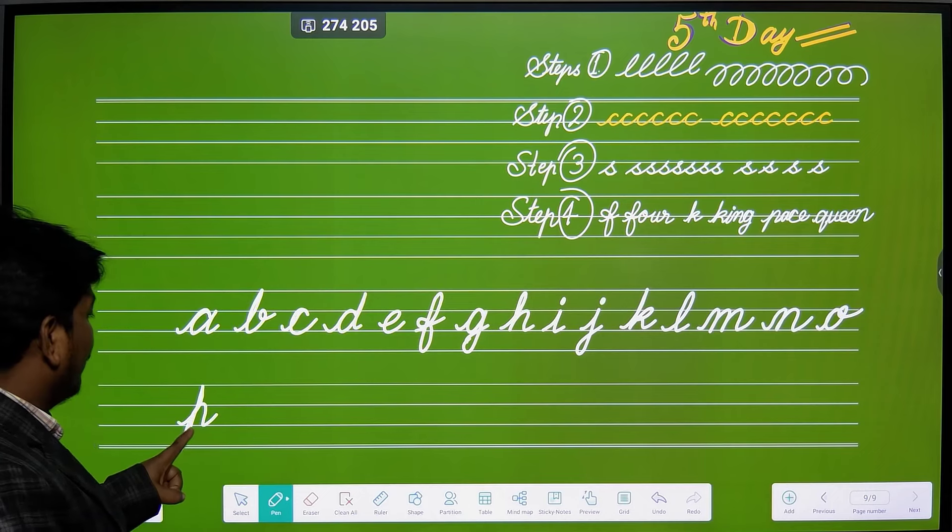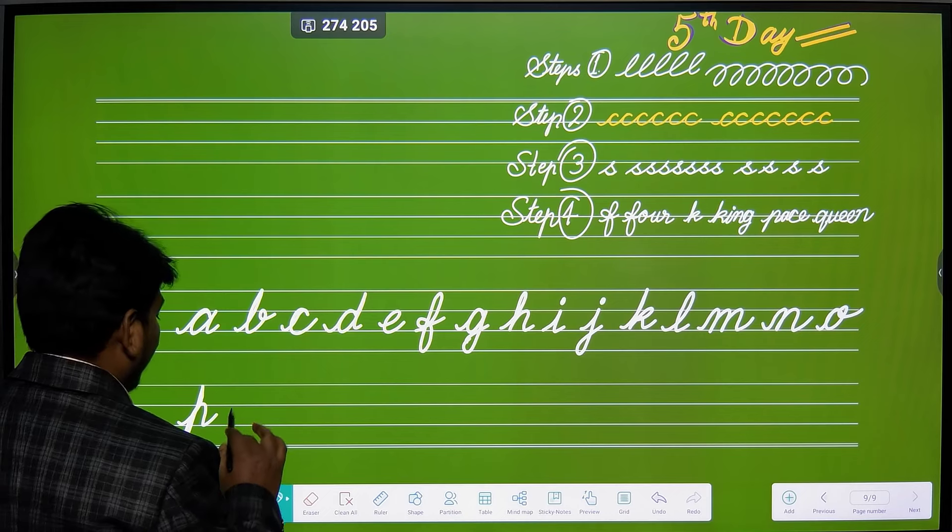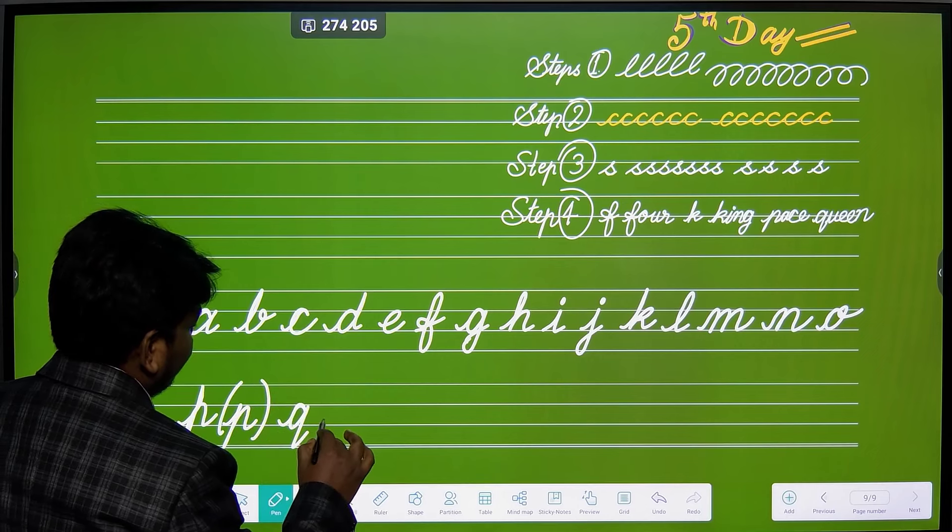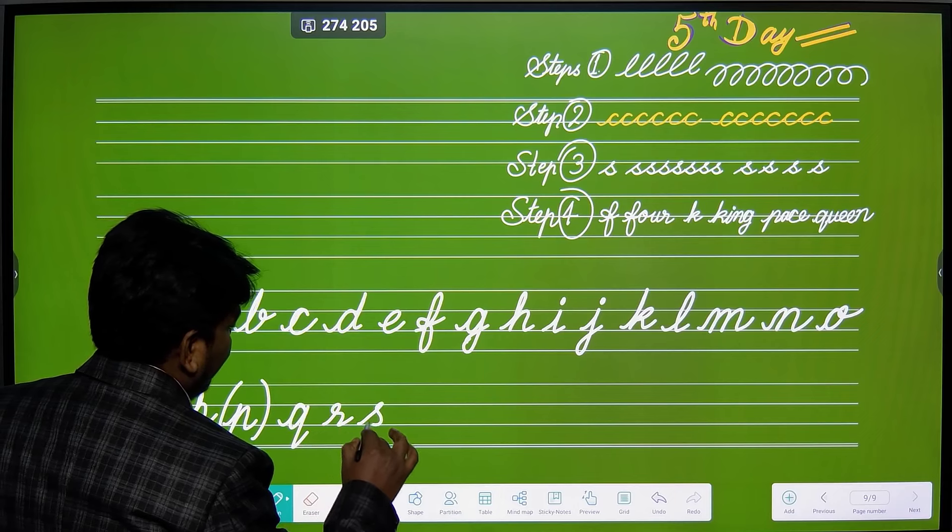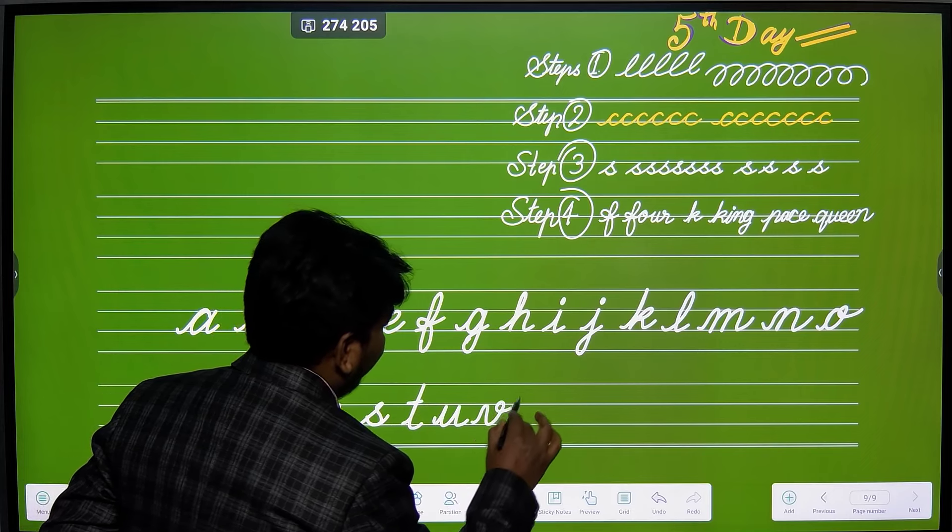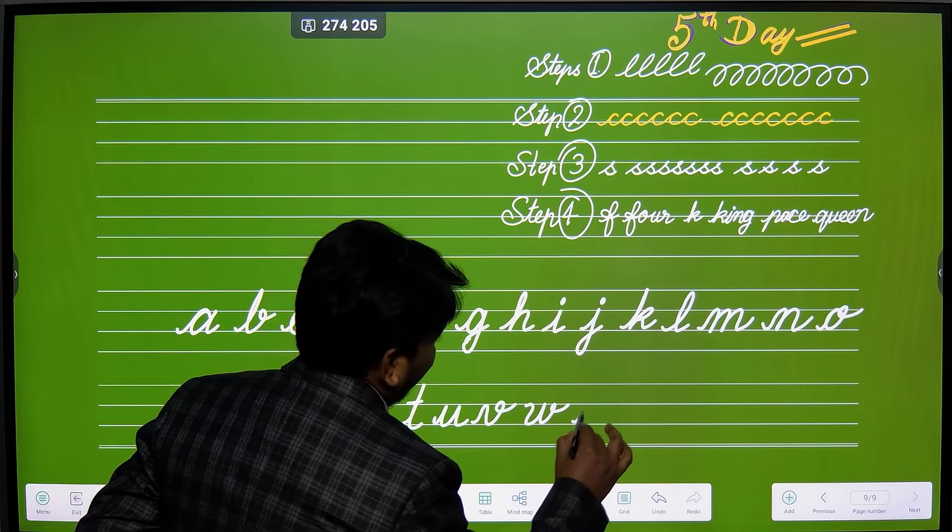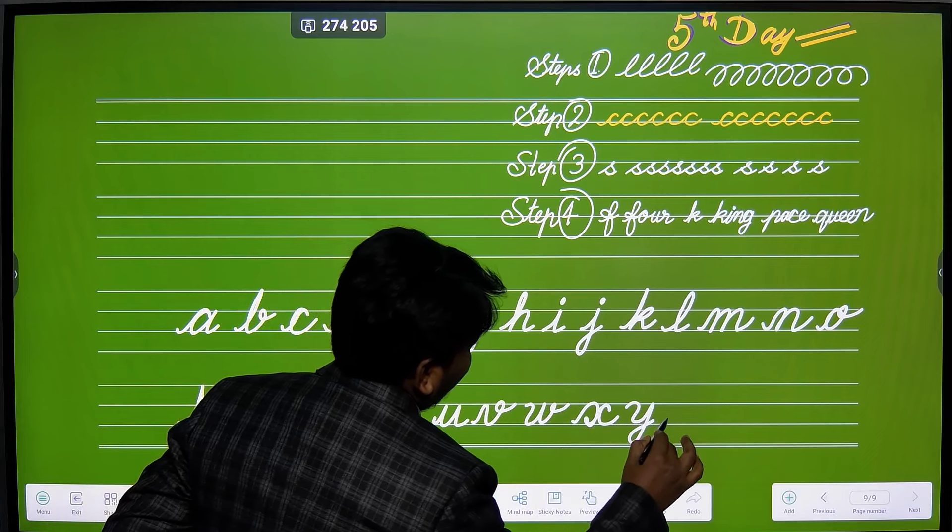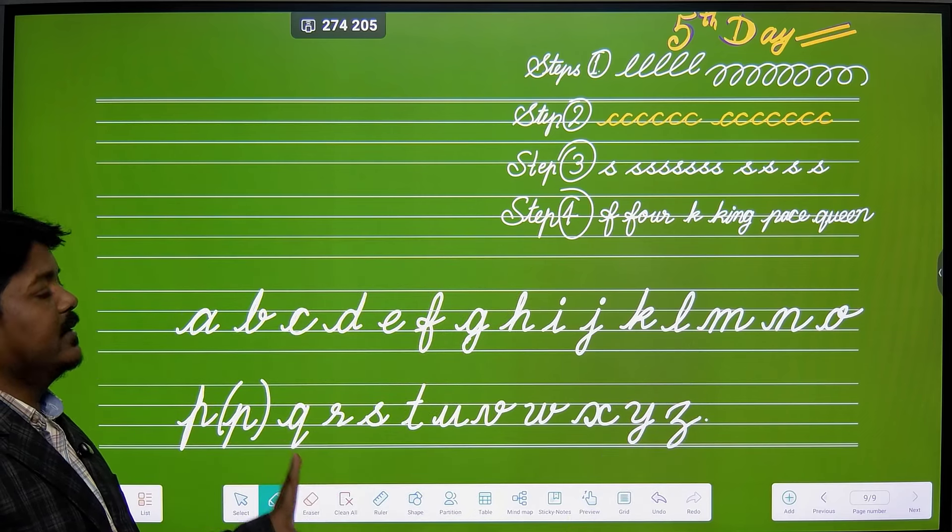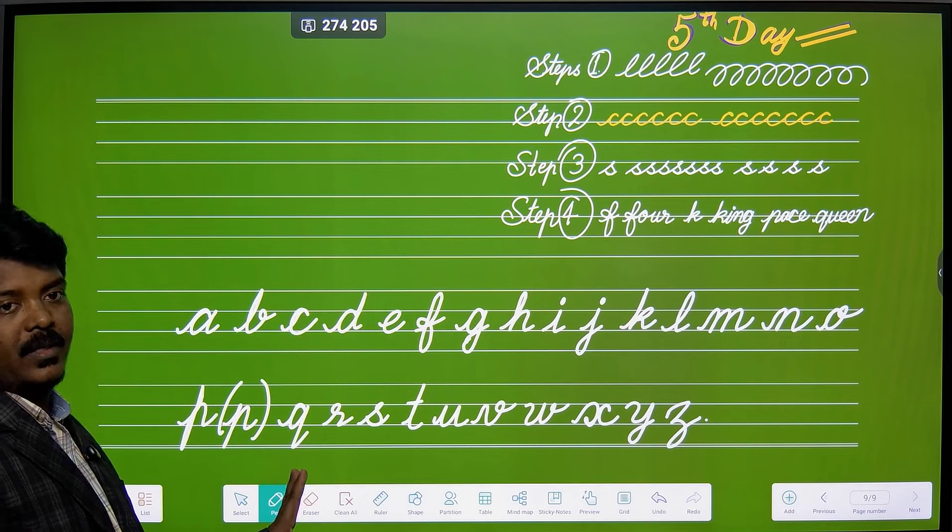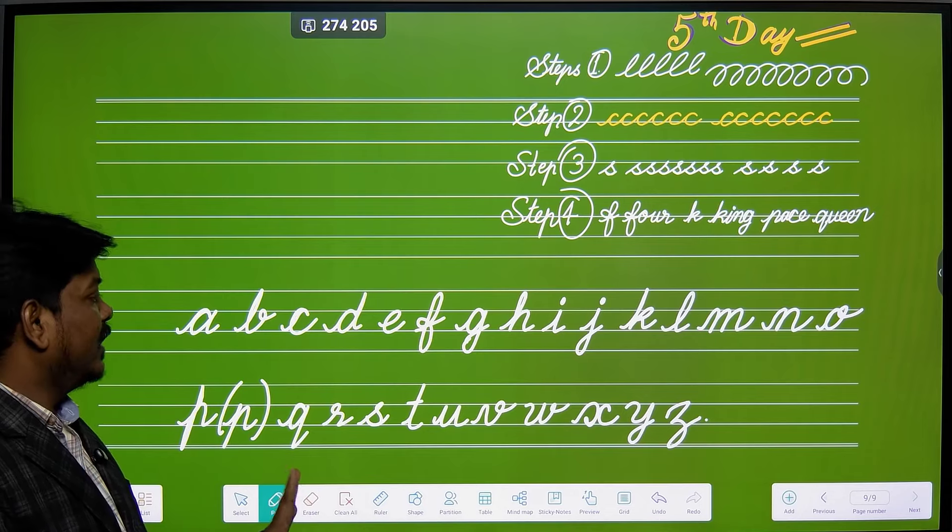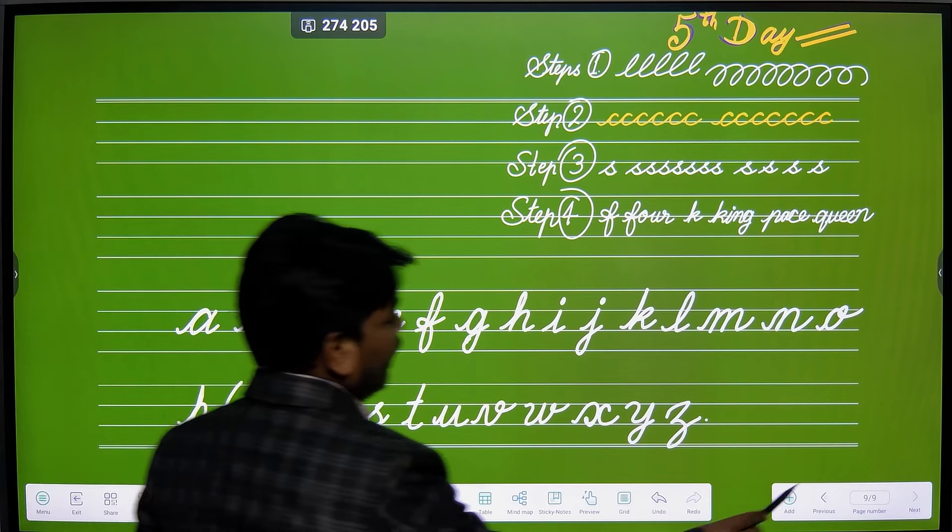Both P can be written - one down and upper one. Both you can carry on. This P is also good. Q, R, S, T, U, V, W, X, Y, Z or Z. Okay, here we have A to Z in cursive small letters. Done. The capital letters of cursive or block letters of cursive will be taught on the sixth day. Clear? Okay, so can we move to other?